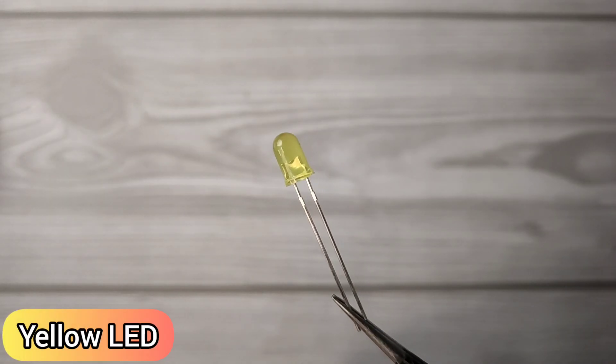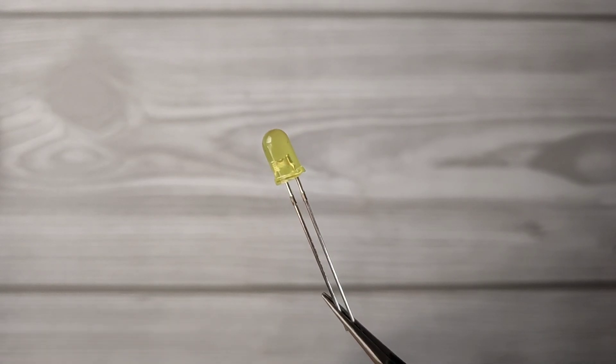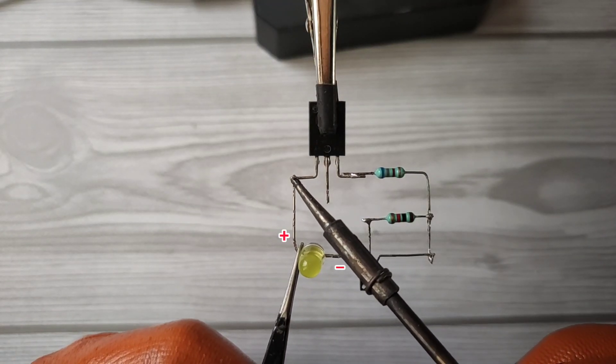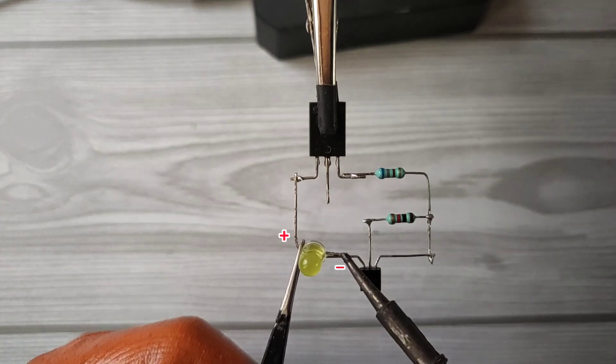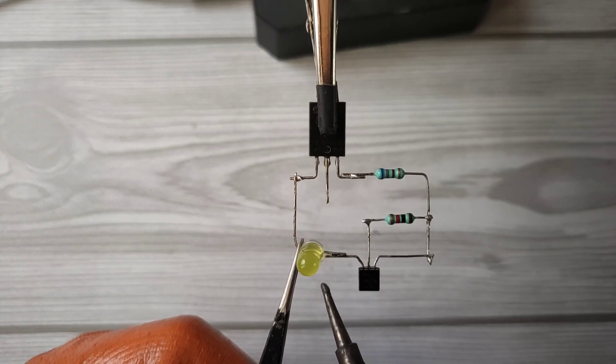Now take a yellow LED. Solder the LED positive with the base of the transistor and negative with pin 3 of the shunt regulator.